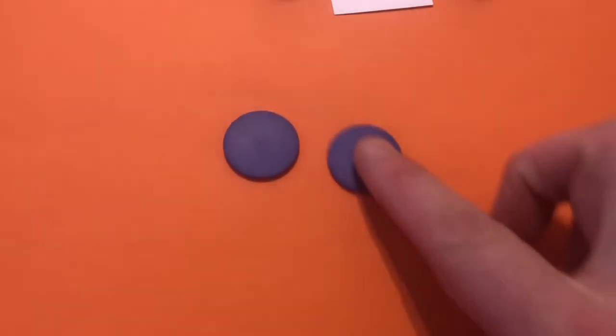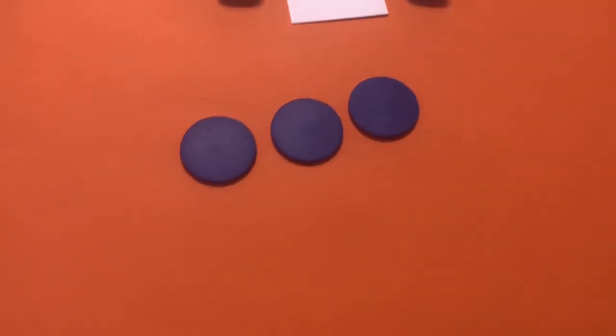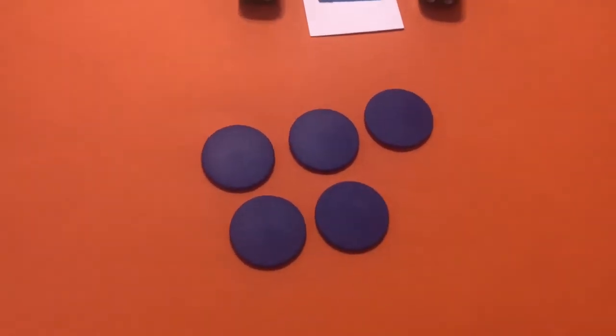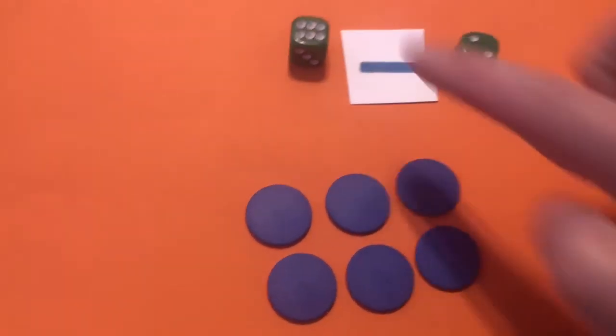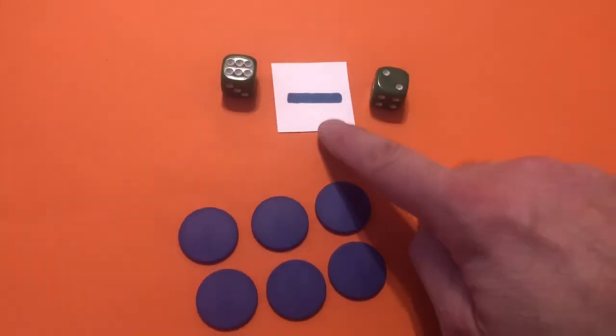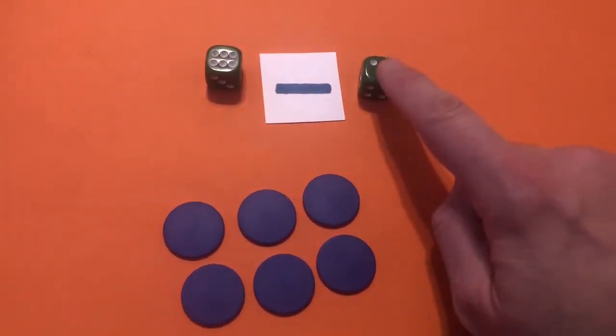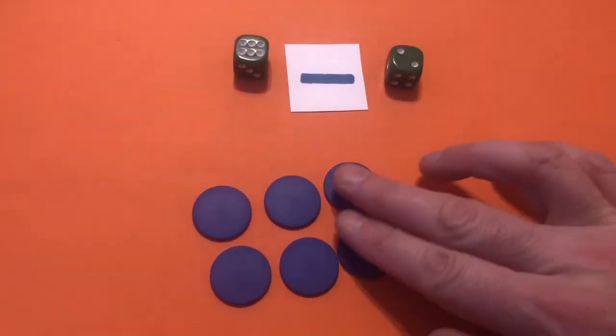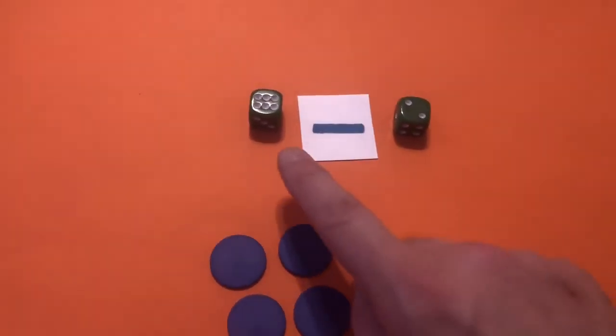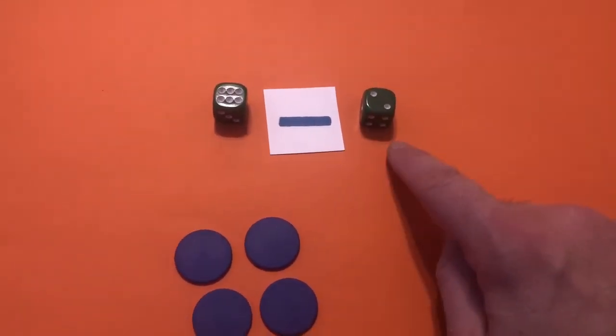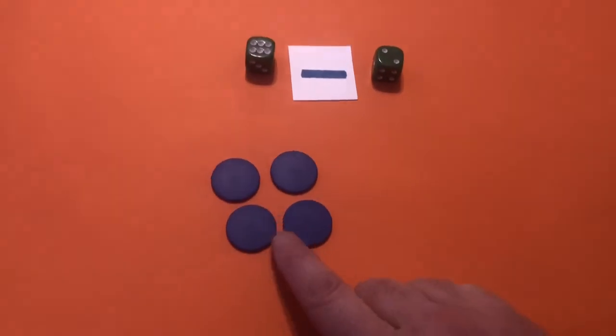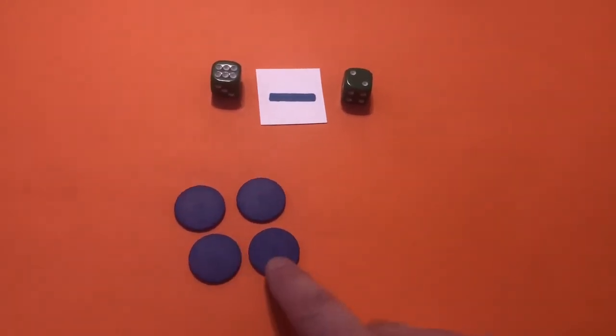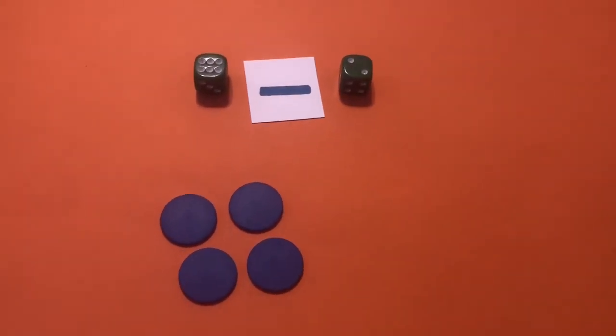Six minus two. So, I need to put my six out on the table. One, two, three, four, five, six. So, I have my six. And I have to subtract or take away two. So, I'm going to take those away. Six minus two equals one, two, three, four. Six take away two equals four.